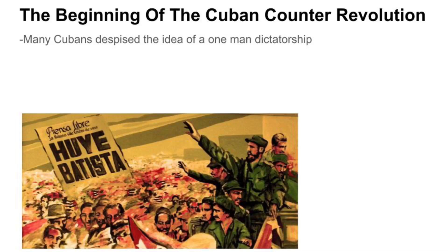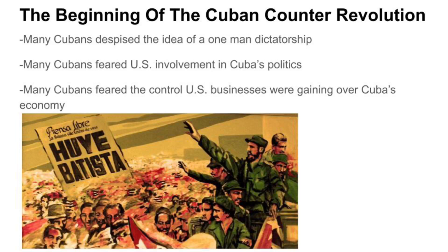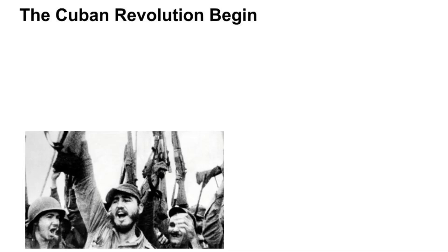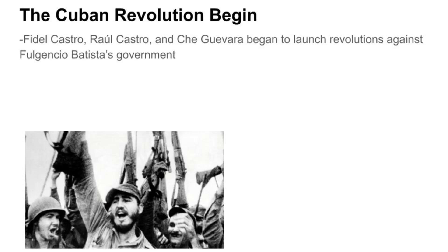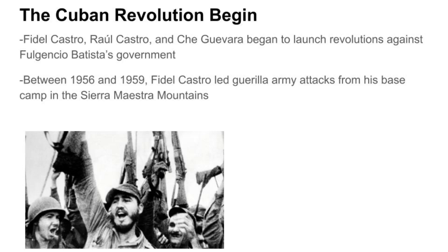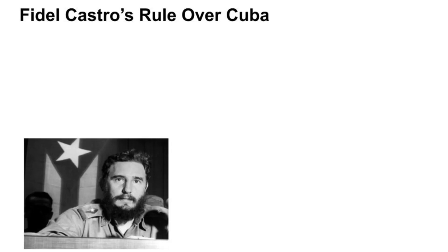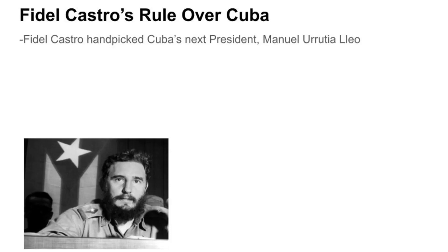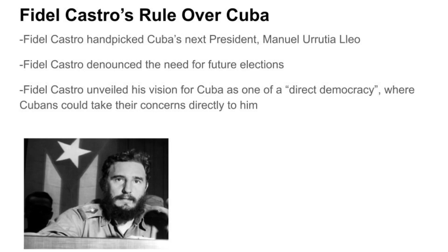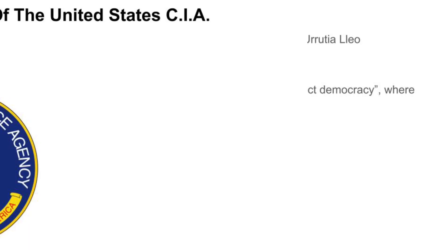Many Cubans despised the idea of a one-man dictatorship, fearing U.S. involvement in Cuba's politics and the control U.S. businesses were gaining over their economy. Under the leadership of Fidel Castro, Raul Castro, and Che Guevara, Cubans launched counter-revolutions. Between 1956 and 1959, Castro led guerrilla assaults from his base camp in the Sierra Maestra mountains. Overwhelmed and incredibly unpopular, Batista retreated from Cuba. Wielding complete control, Fidel Castro handpicked Cuba's next president, Manuel Urrutia Leo, and denounced the need for future elections, citing his vision of a direct democracy.